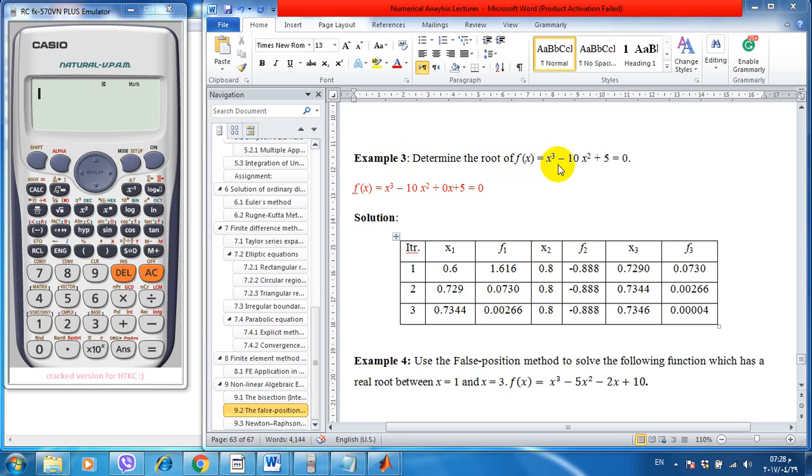equal to x³ - 10x² + 5 equal to zero. What is the value of x that makes y equal to zero? This equation was solved numerically by hand and we found that the value of x may be equal to 0.7346, with four zeros after the decimal for the function.